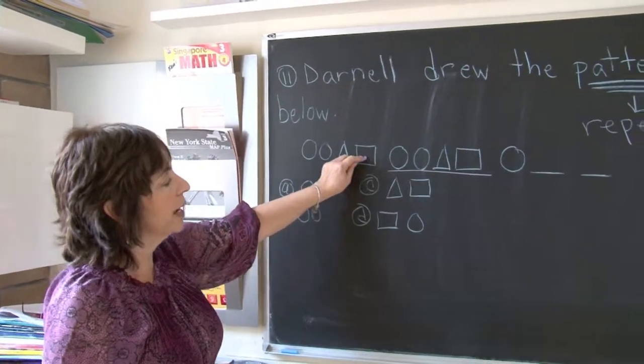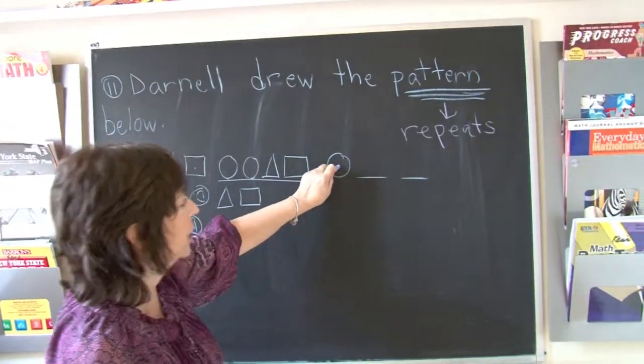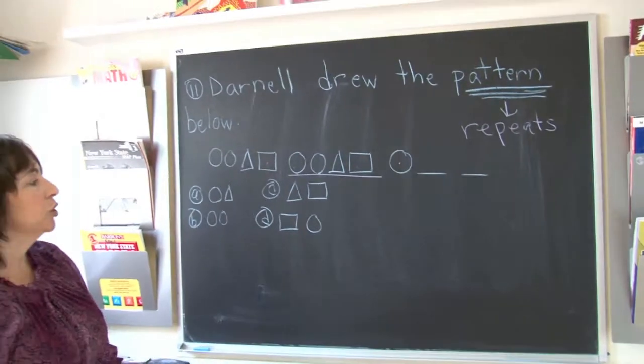Circle, circle, triangle, square. Circle, circle, triangle, square. Circle, and now with the rhythmic pattern you should know.